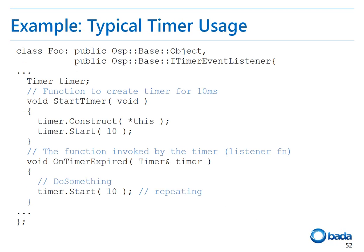Let's take a look at some sample code where the timer is used directly. The code is part of a program that performs an operation every 10 ms. First, to perform the operation every 10 ms, the foo subclass of the iTimerEventListener has been defined that receives timer events. Then the startTimer function is implemented to start the timer in the program.